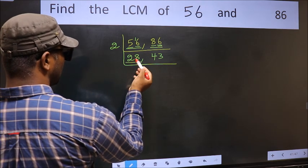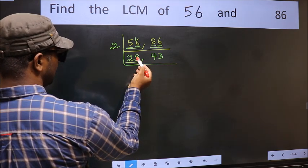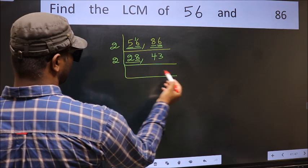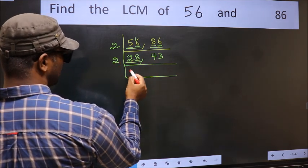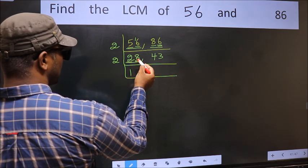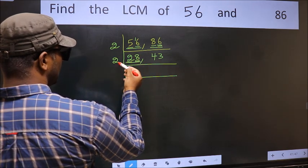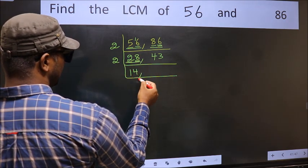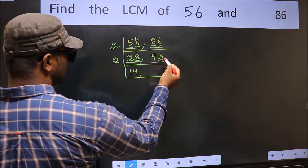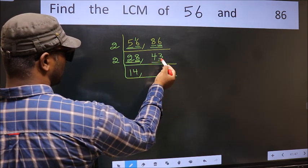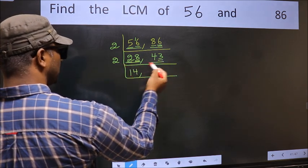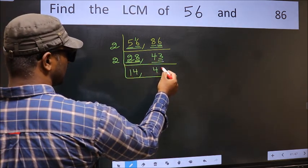Now we have 28. Last digit is 8, so take 2. The first digit is 2; when do we get 2 in the 2 table? 2 ones are 2. The other digit is 8; when do we get 8 in the 2 table? 2 fours are 8. The other number is 43. Last digit is 3, so 43 is not divisible by 2 — write it down as it is.